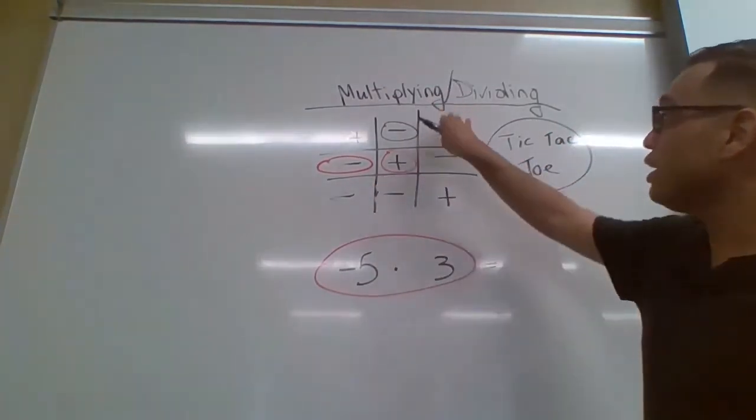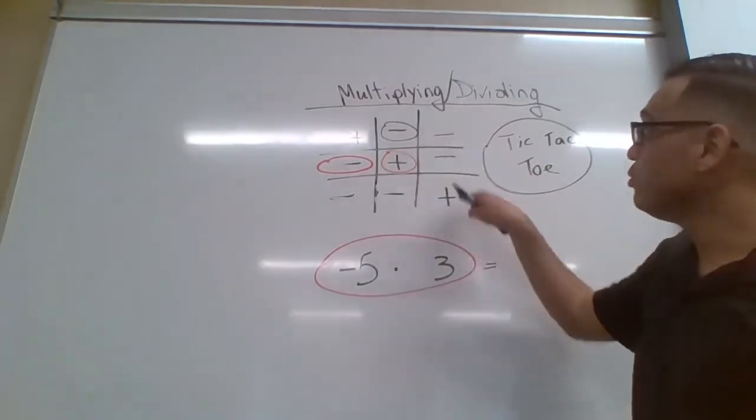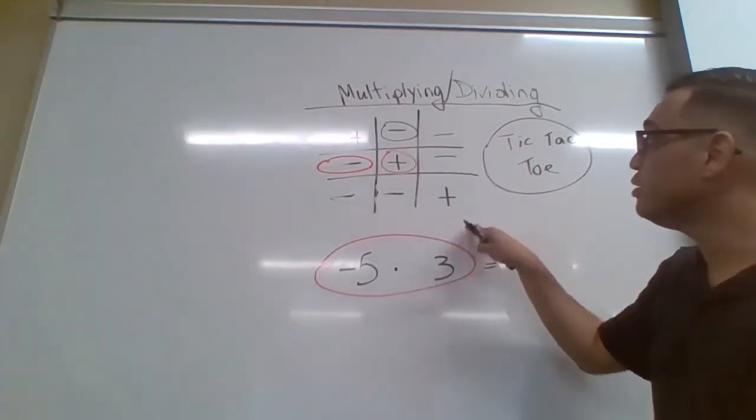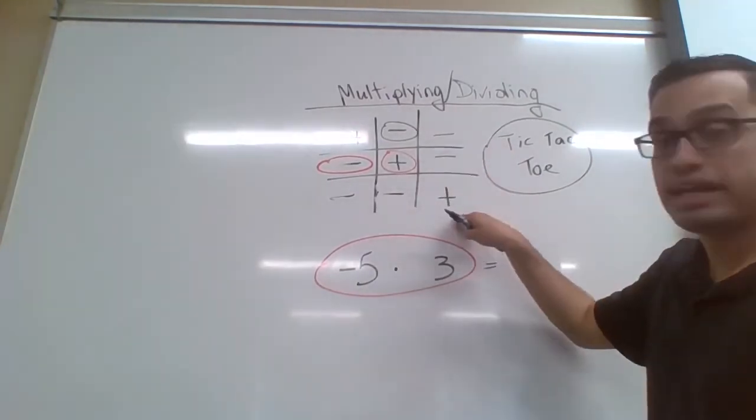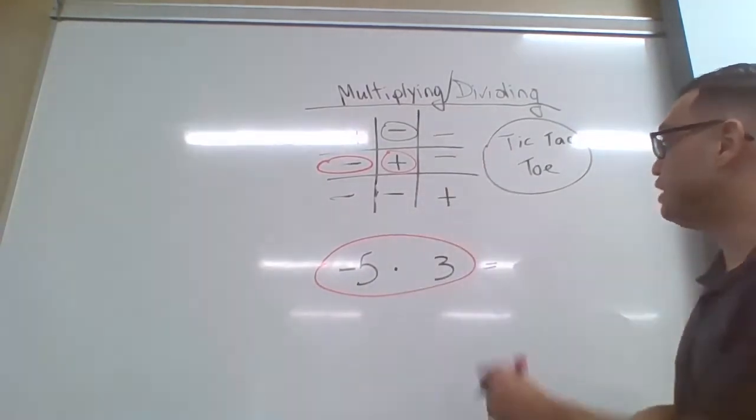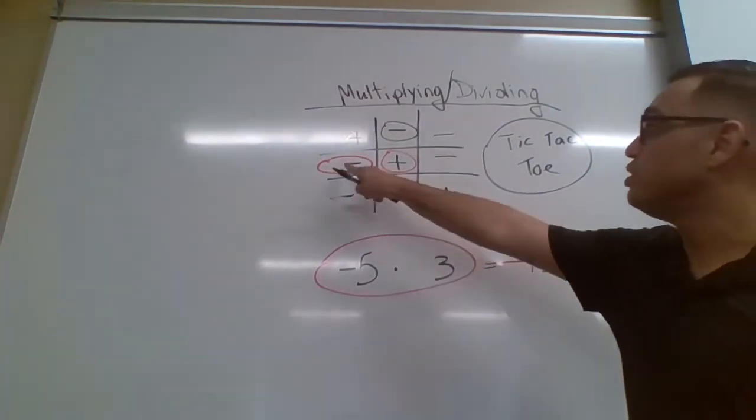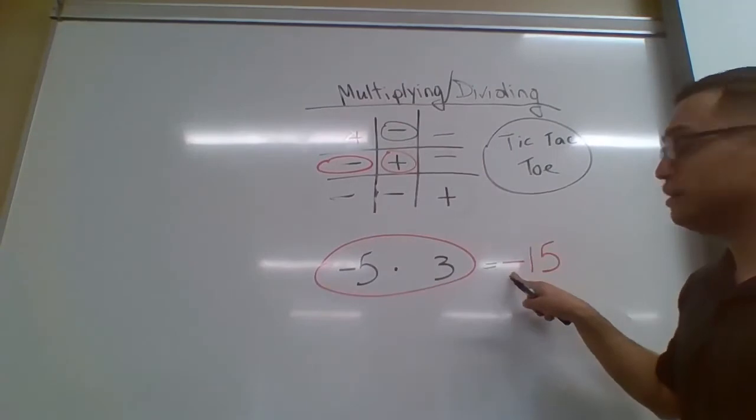So again, this column right here, the last column with negative, negative, positive, this is where the answers, what type of sign will the answer be. So this is going to be a negative. So five times three is 15. And so a negative times a positive will be a negative.